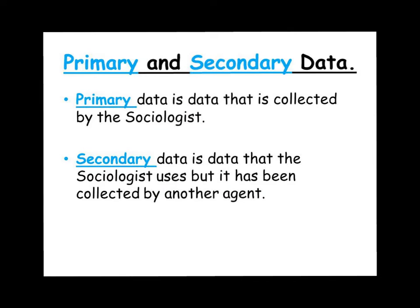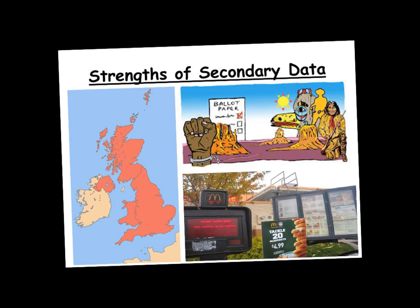Now let's look at some of the strengths of secondary data — using something that's already been produced by somebody else, whether official statistics, another sociologist's research, personal and historical documents, or mass media. A key strength is that it's quick and cheap, almost like going through a drive-thru. For instance, if I wanted to find out about the uptake of sociology at A-level by boys and girls across the country, I can just go onto the internet and find that data — it's readily available and free. Collecting that using primary data would require visiting every school and sixth form college, which would take far too long and be far too expensive.